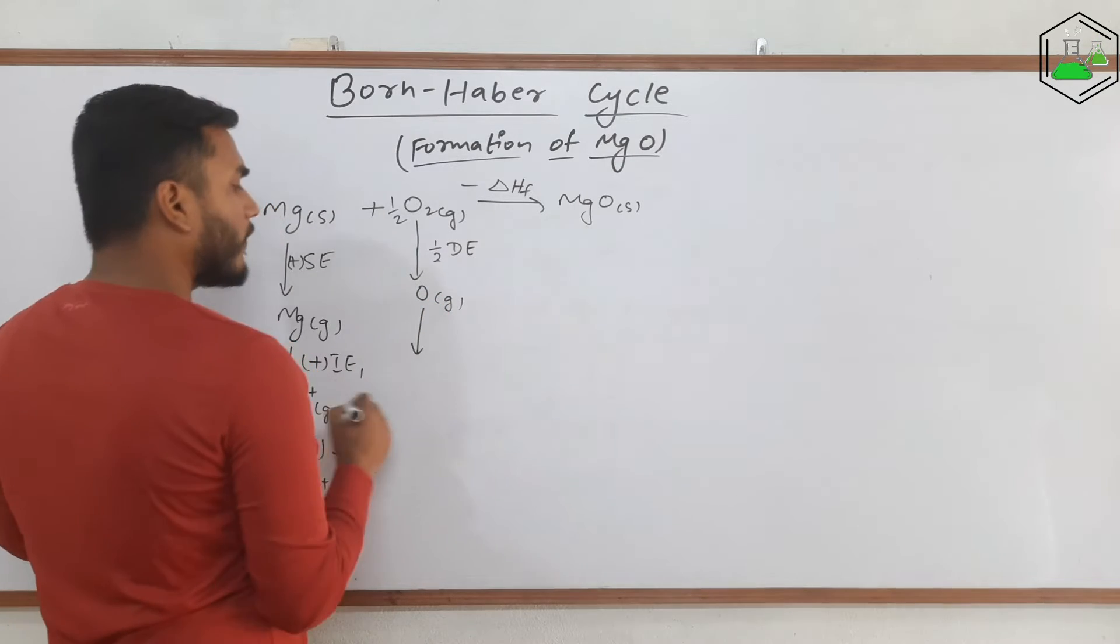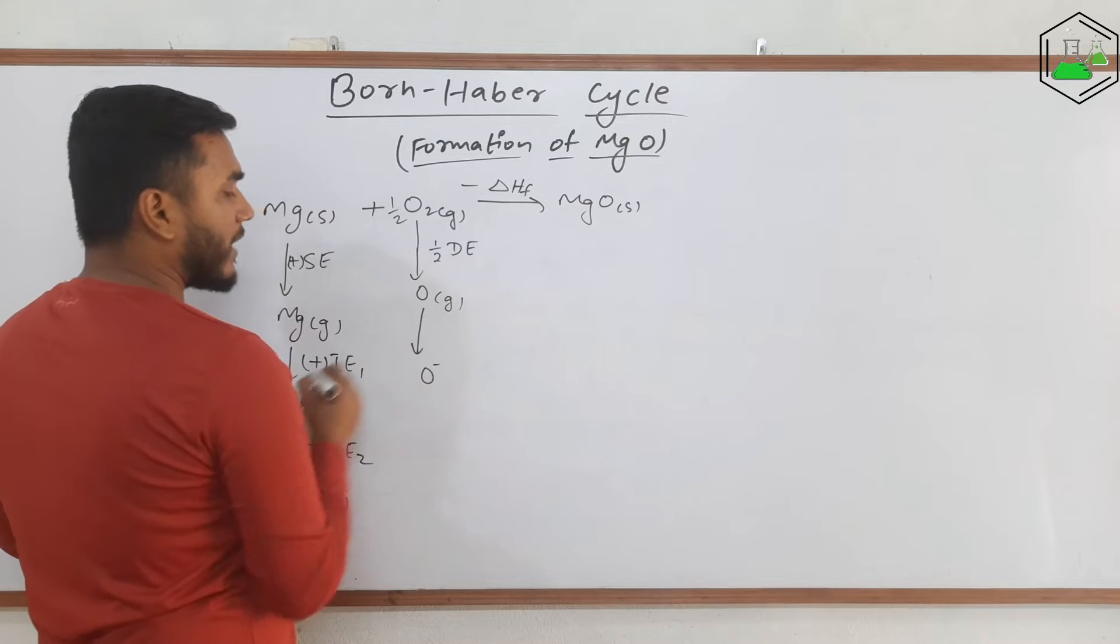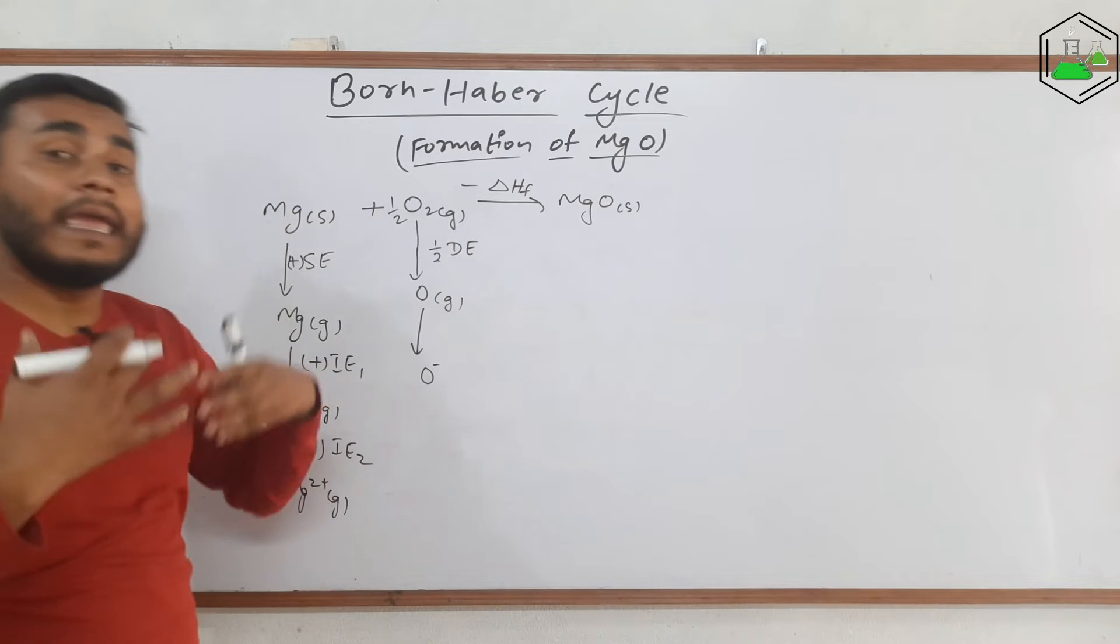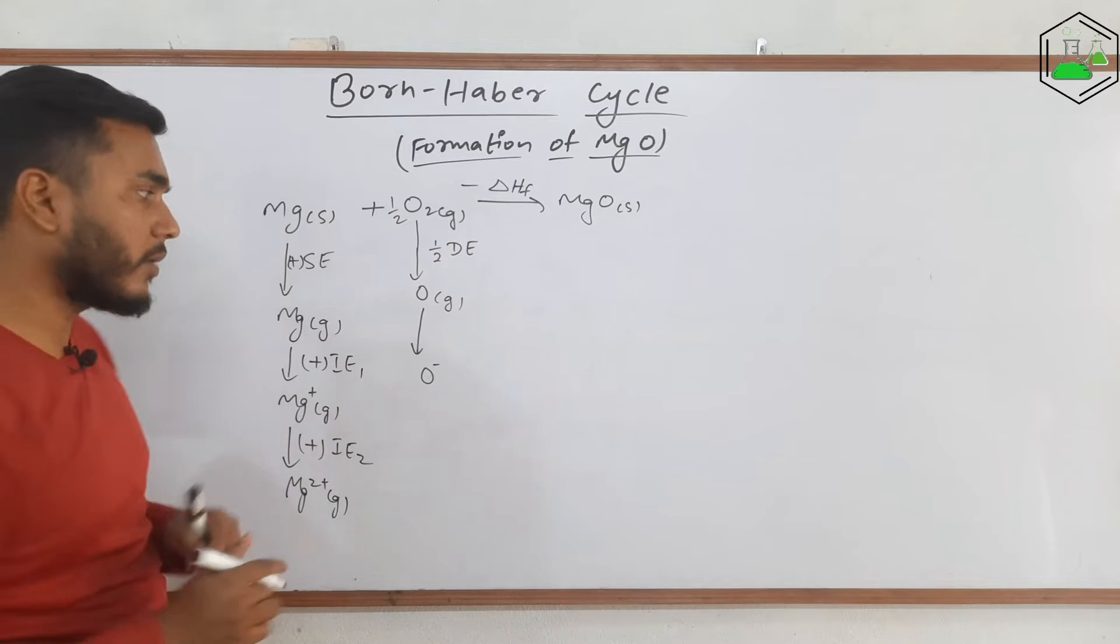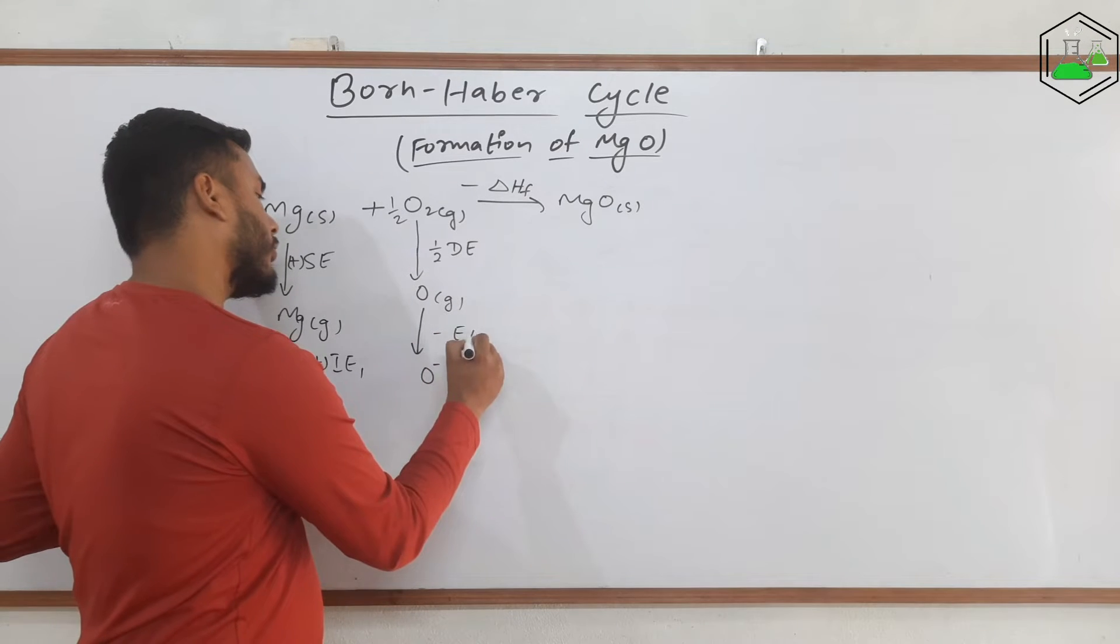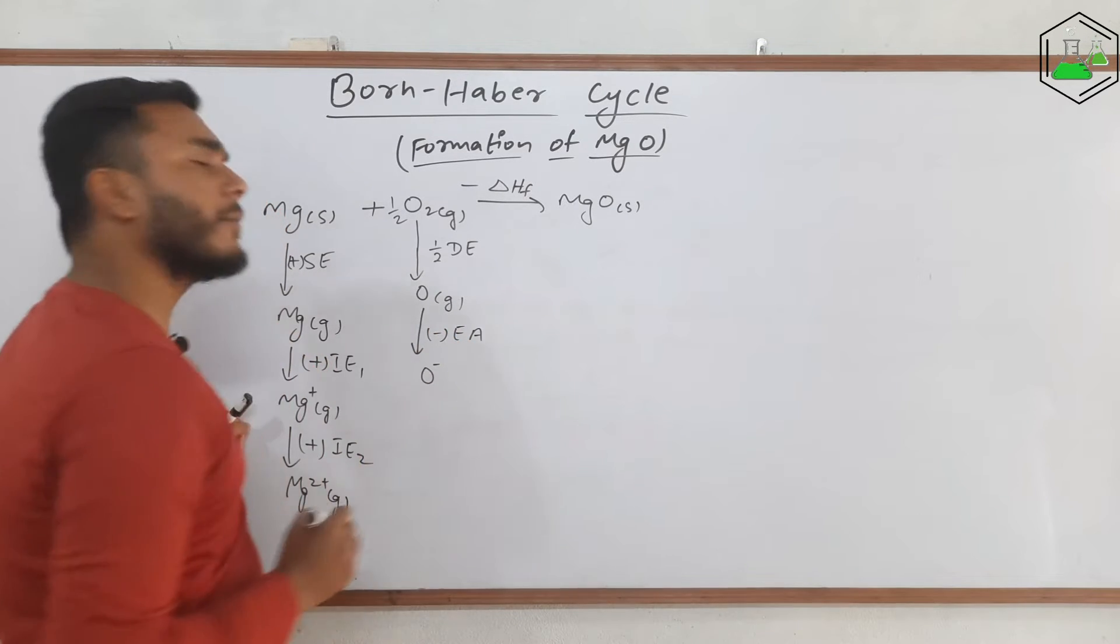Now we need to convert it into the anionic form. That means it needs to gain an electron and as a result of that it will release some energy that is called electron affinity. Till this much it is completely similar.